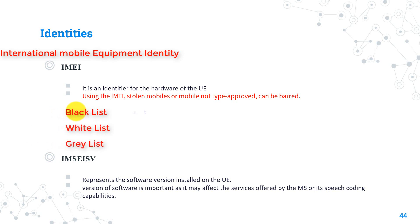Blacklist means that the mobile handset is stolen, so the network will block it from connecting. Graylist means the mobile is still not used but is not blocked — it just needs some actions like being owned by someone first. The whitelist means the mobile handset has no issue and its user can use it normally. The database that stores these IMEI numbers in the network is called the EIR, which was explained in the network nodes lecture.